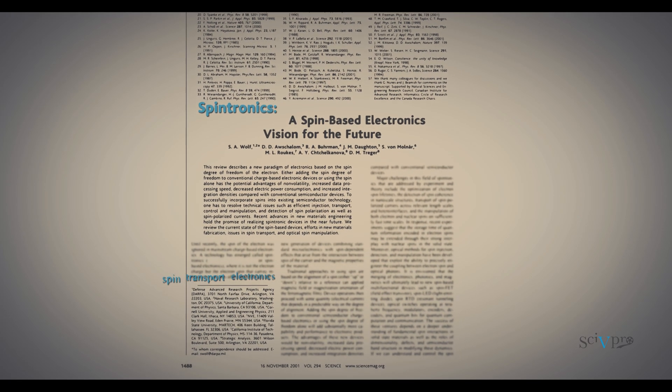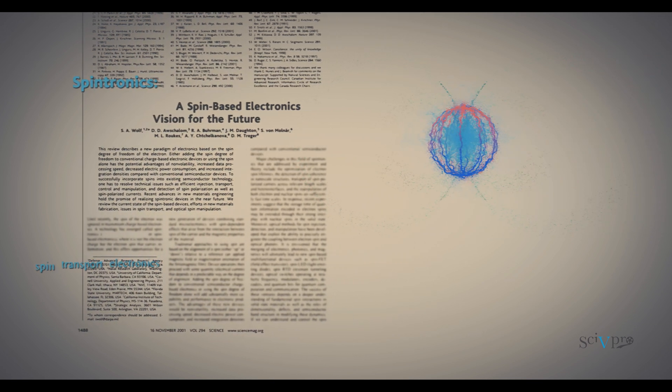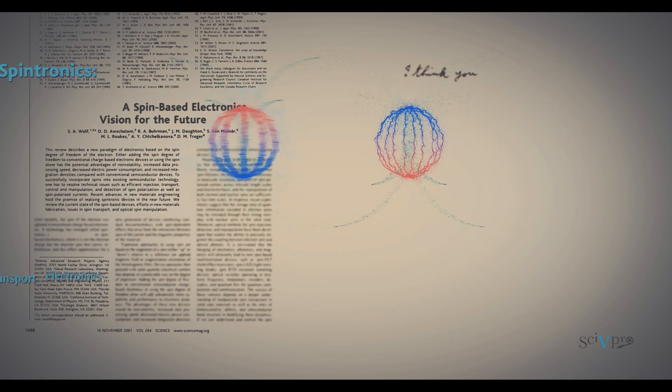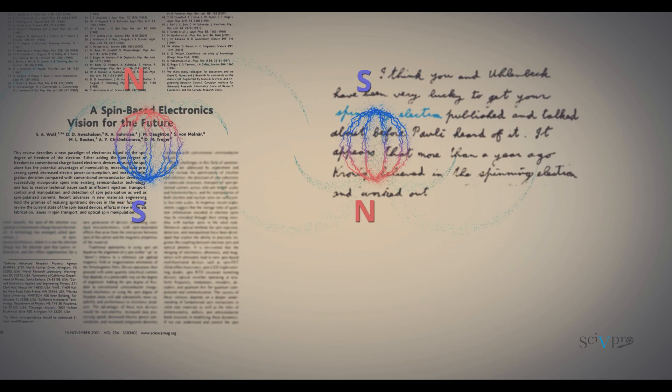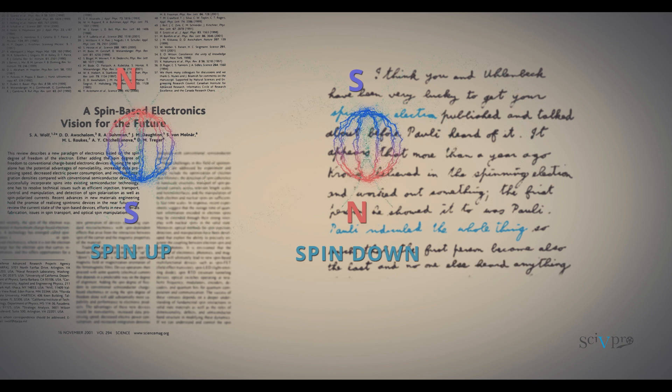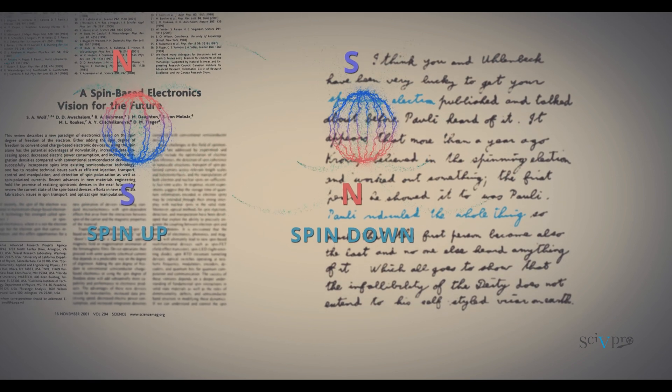Spintronics means spin transport electronics and indicates electronics made of spins as opposed to electronics made of charges. The spin is a fundamental property of electrons which makes them behave as very small compass needles. The spin of an electron has a direction and can point up or down or in between.